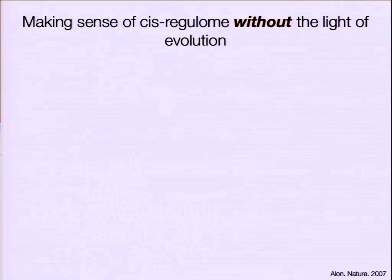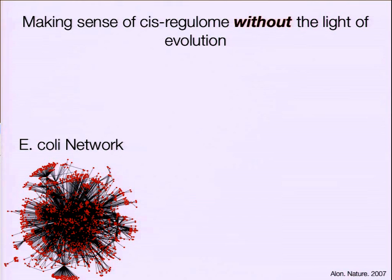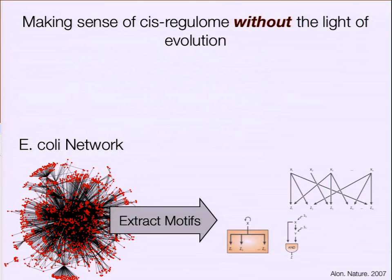How did we originally make sense of the cis-regulome, and why are we talking about evolution? First I want to explain how we've looked at the cis-regulome without the light of evolution. It starts with taking the cis-regulome and turning it into a network — foundational work about a decade ago by Uri Alon's lab. They took the E. coli regulatory network, encoded it, and extracted out what are called motifs, which are significantly overrepresented subgraphs in the network. They used a random graph model — just an edge-switching null model.